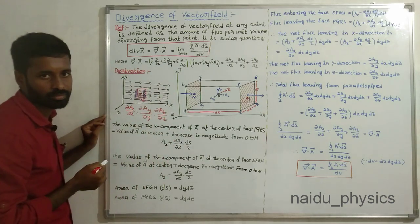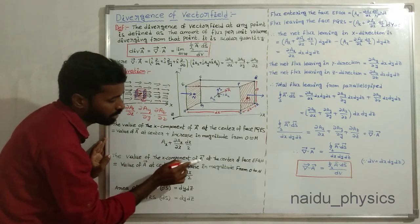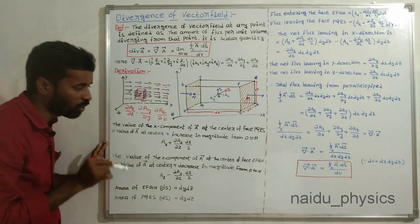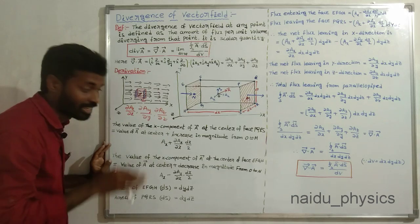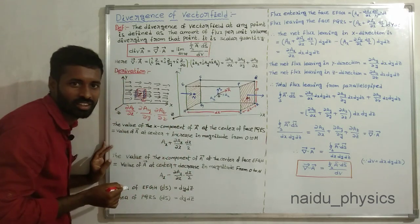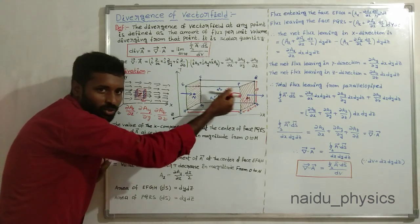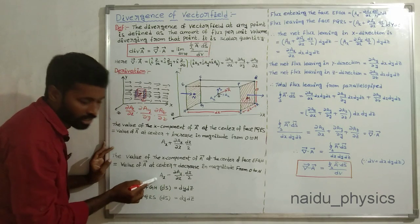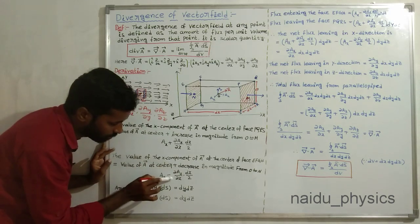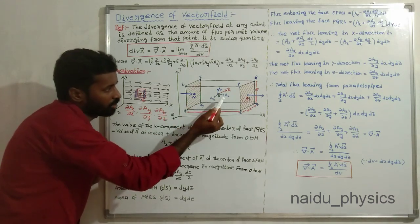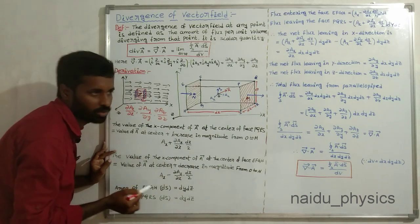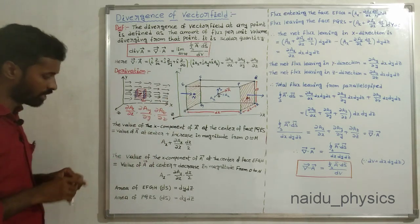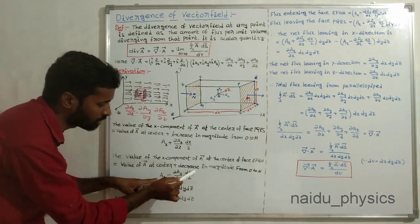Now, the x-component of A-bar at the center of surface EFGH equals the value of the x-component at center O minus the decrease in magnitude from O to N. We move opposite to the field, so it decreases — negative sign. The change in velocity with respect to x is ∂Ax/∂x over distance dx/2. Therefore, the x-component of A-bar at point N is Ax − (∂Ax/∂x)(dx/2).